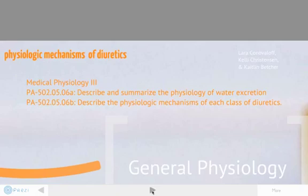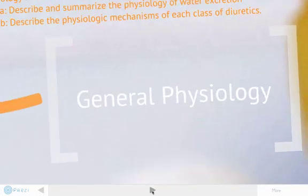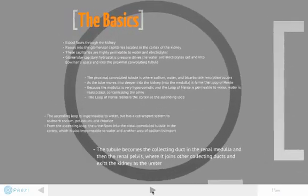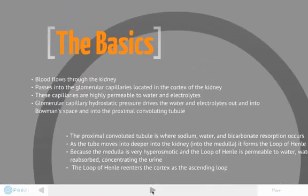We're going to start with some general physiology. Blood flows through the kidney and passes into the glomerular capillaries located in the cortex of the kidney. These capillaries are highly permeable to water and electrolytes. Glomerular capillary hydrostatic pressure drives the water and electrolytes out and into Bowman's space and into the proximal convoluted tubule.